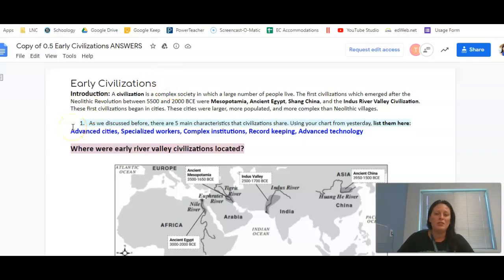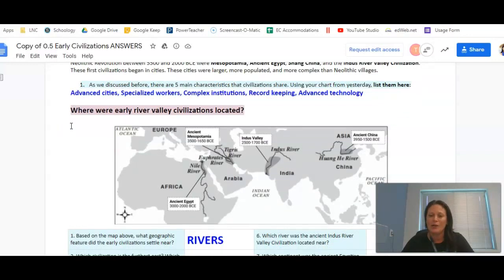Question number one wants to know the five characteristics that a civilization shares. Remember the acronym ANTS CART if that helps you, which stands for Advanced cities, Specialized workers, Complex institutions, Record keeping, and Advanced technology.